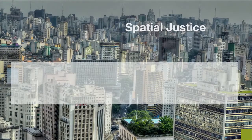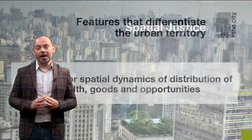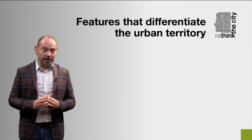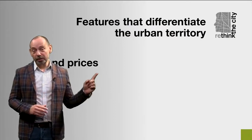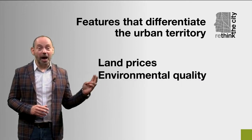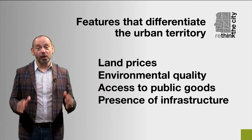Spatial justice matters because of the territorial or spatial dynamics of distribution of wealth, goods, and opportunities. These are not evenly distributed throughout an urban territory. There are reasons why they are located in specific places in cities. There are features that categorize and differentiate the urban territory, such as land prices, environmental quality, access to public goods, presence of infrastructure, and many more.